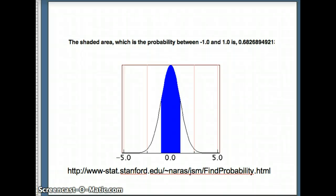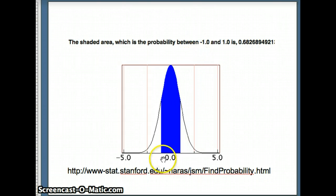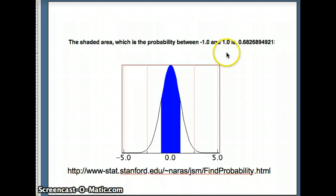Let's take a look at how we can see this. Using this applet available from Stanford, we can find that the shaded area — which is the probability between negative one and positive one — is indeed pretty close to 68%. Let's go to that applet and try some other things we can do with it.